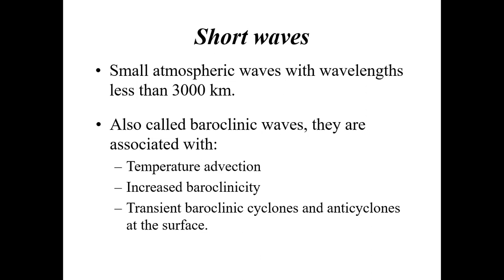Short waves, on the other hand, are much smaller atmospheric waves with wavelengths less than 3,000 kilometers. They're also called baroclinic waves — associated with temperature advection and increased baroclinicity, an area favorable for storm development. We get transient baroclinic cyclones and anticyclones — the lows and high-pressure systems you see on weather maps at the surface.